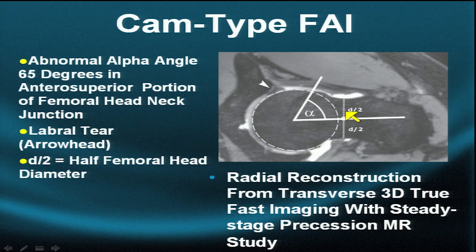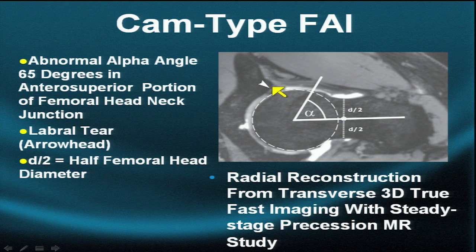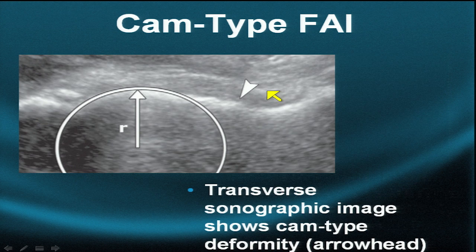D divided by two and D divided by two should be equal to correctly draw this line. Our patient has a through-and-through labral tear without a paralabral cyst.